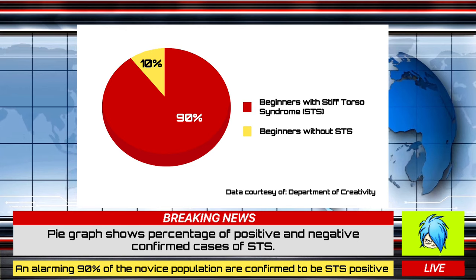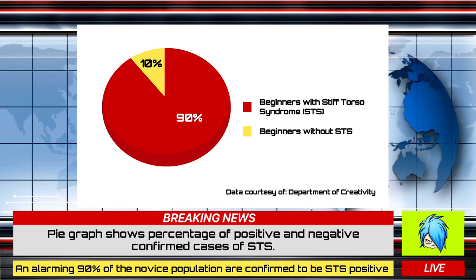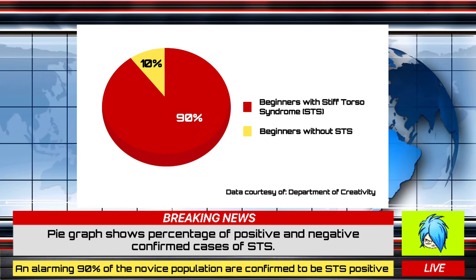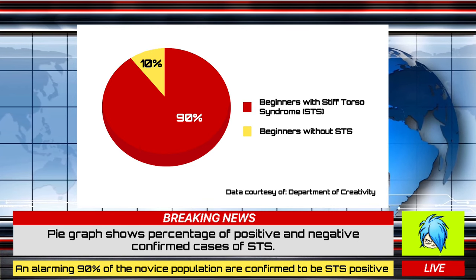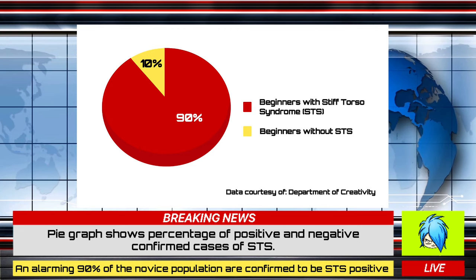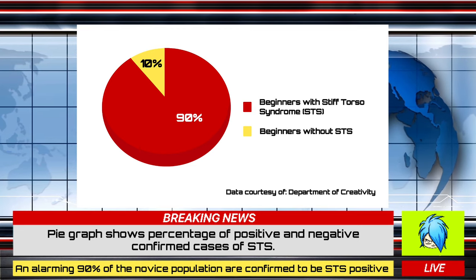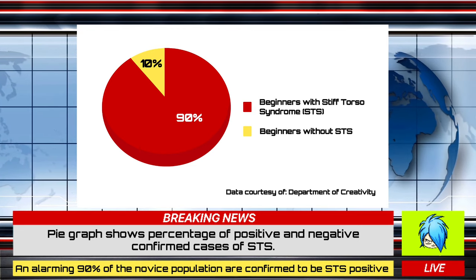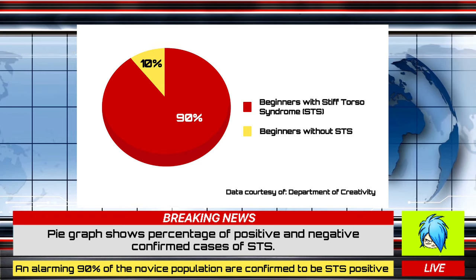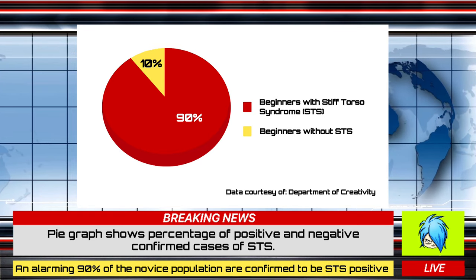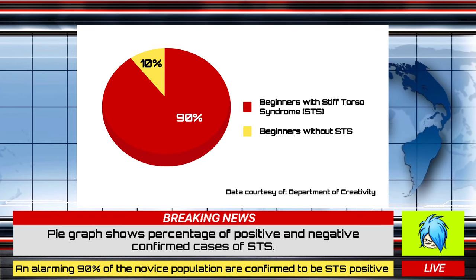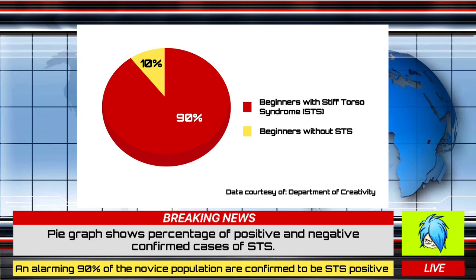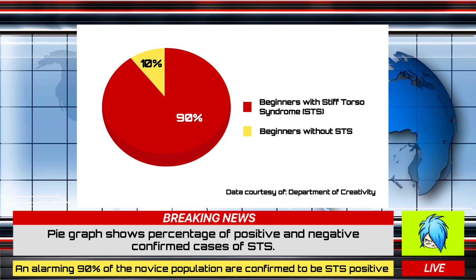So here's a graph showing clickbait-and-ad-free statistics of beginners having STS. As you folks may have noticed, the red graph represents a whopping 90% of the local Nobis population suffering from STS, and a daring 10% of those who survive or are resilient to the disease.